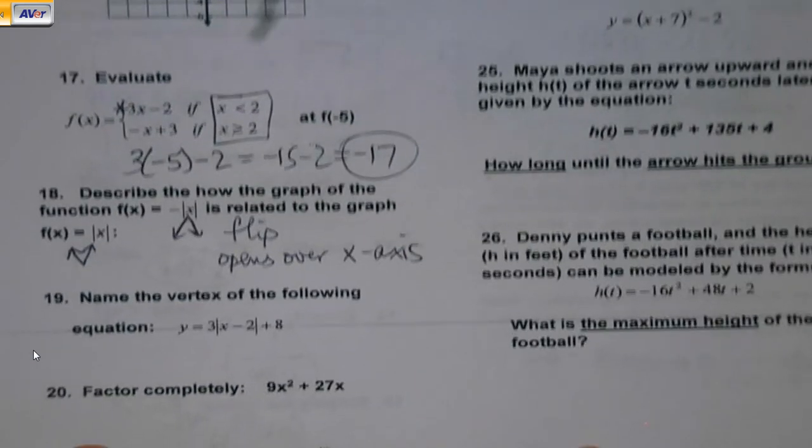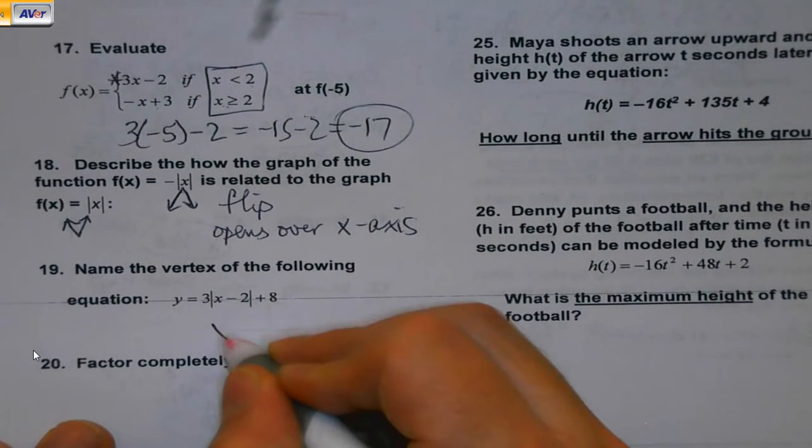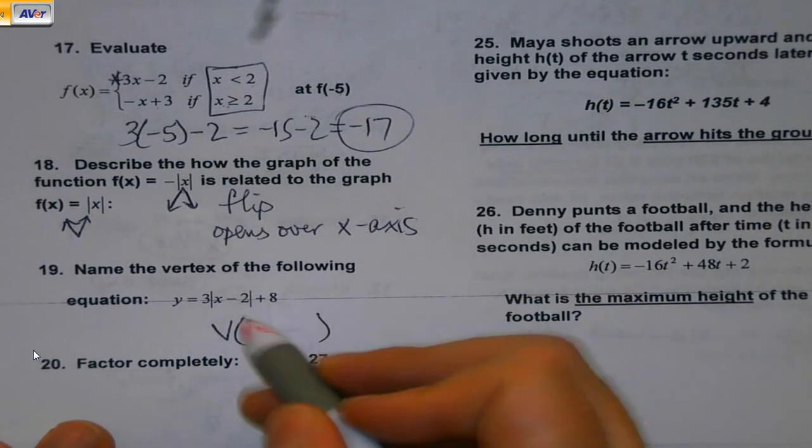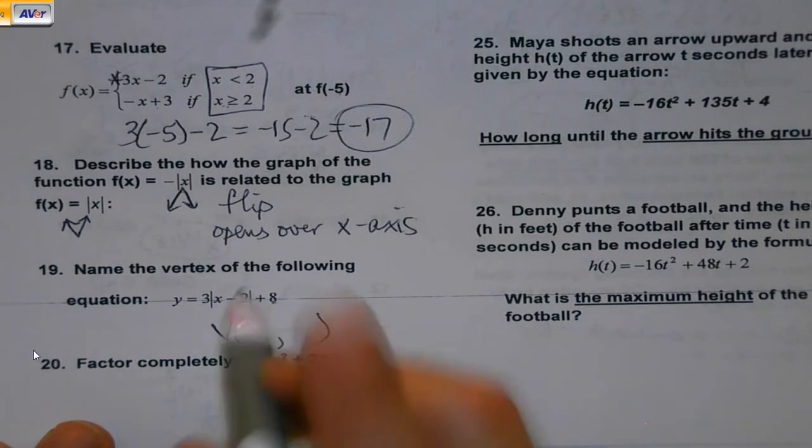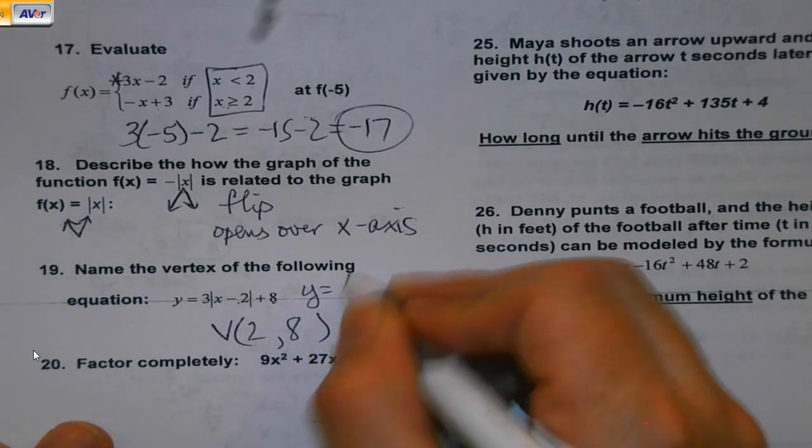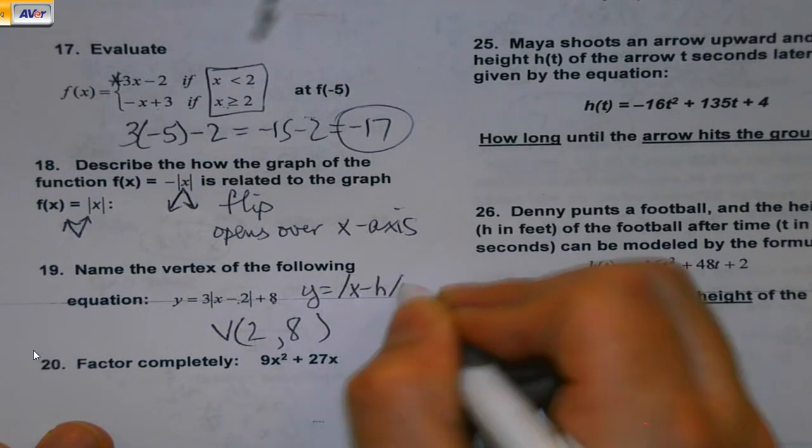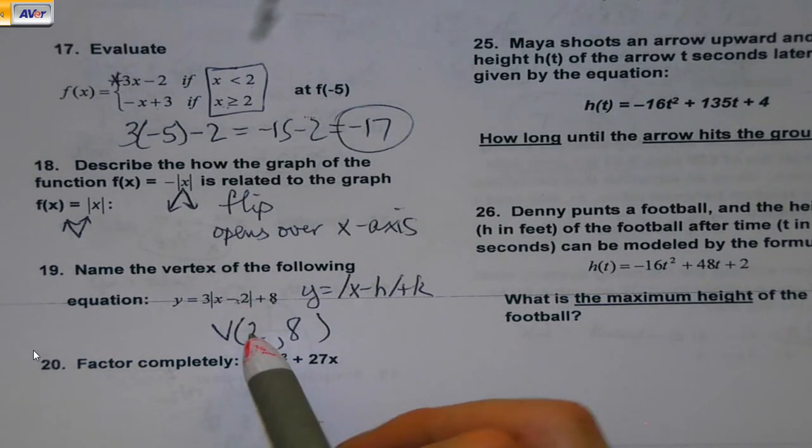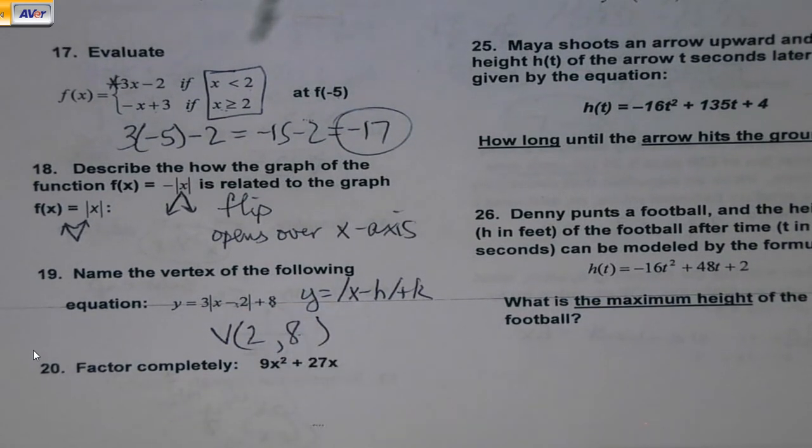And speaking of that, name the vertex of the following. Now, be careful. A lot of you here would say negative 2, 8, which is close. But remember our form, it's x opposite of h. It's the opposite of that value inside. And then this k value. Got to be aware of that.